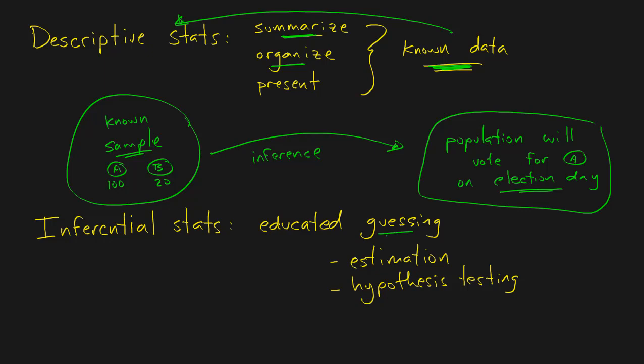Another name for an inference is a guess - or rather, an educated guess, because we didn't make a wild guess. We took a sample, got results, and assume our sample properly represents the population. Later on, when you learn estimation and hypothesis testing, you'll learn how to quantify confidence in your inference. You might say there's a certain chance the population will vote for A - maybe a larger chance for A compared with B.